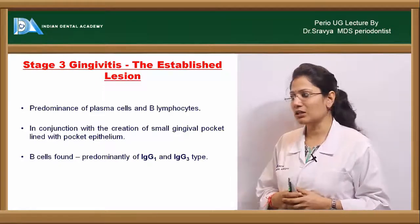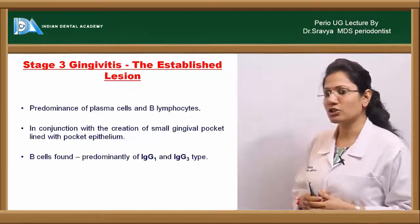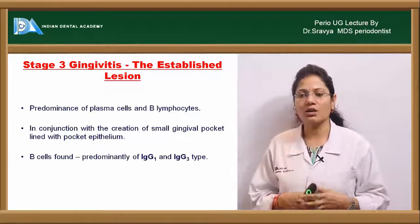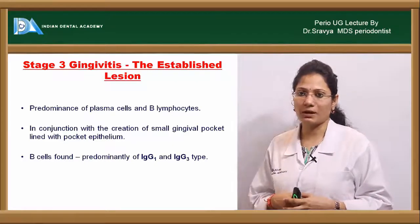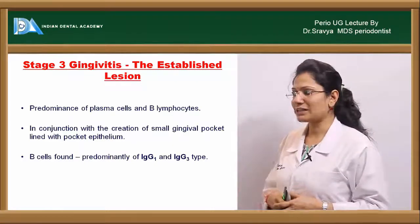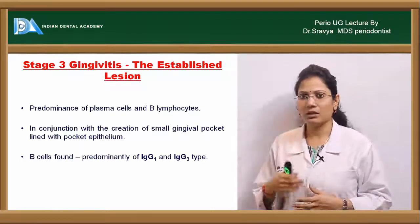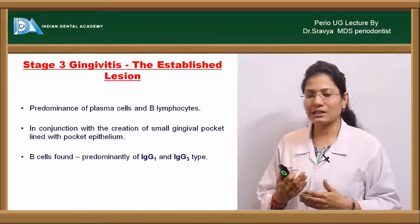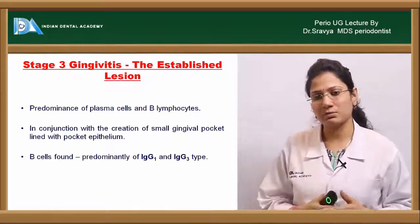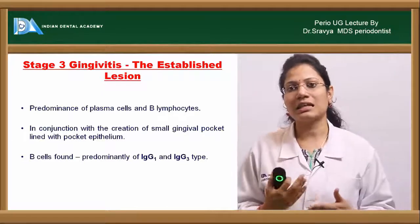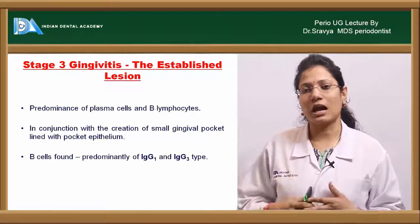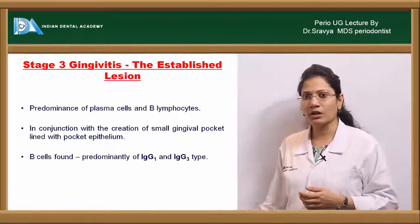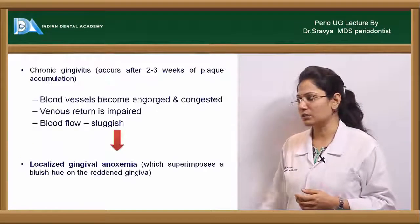Stage 3 occurs in conjunction with the creation of a small gingival pocket lined by pocket epithelium. The B cells found here predominantly secrete plasma cells, which secrete mainly IgG1 and IgG3 types of immunoglobulins.